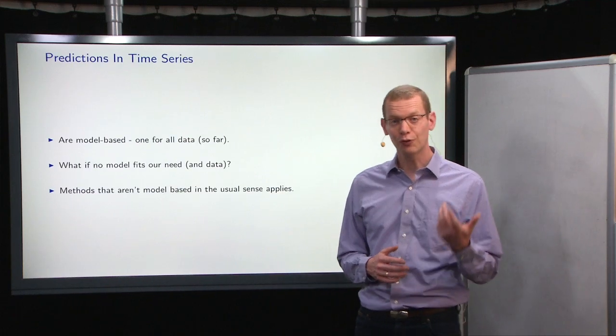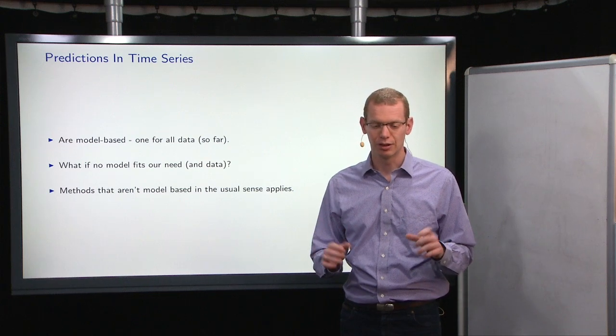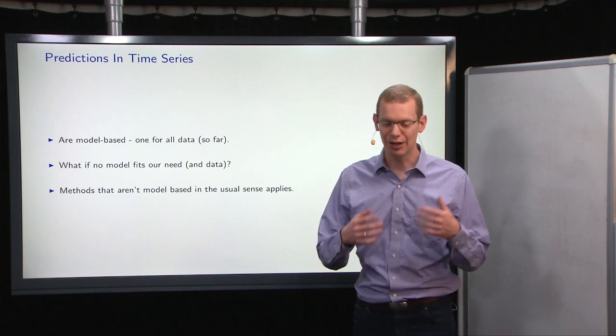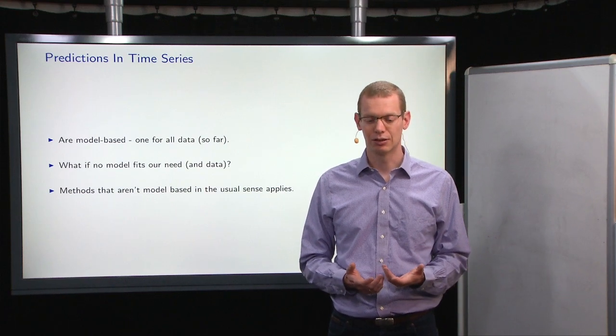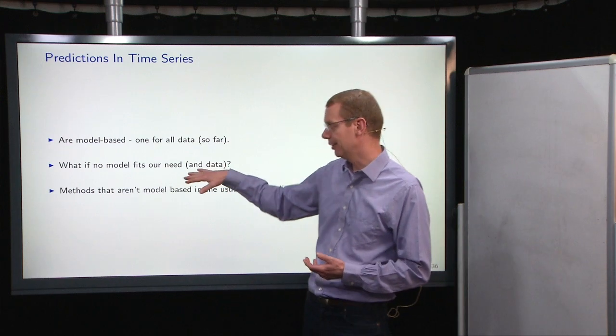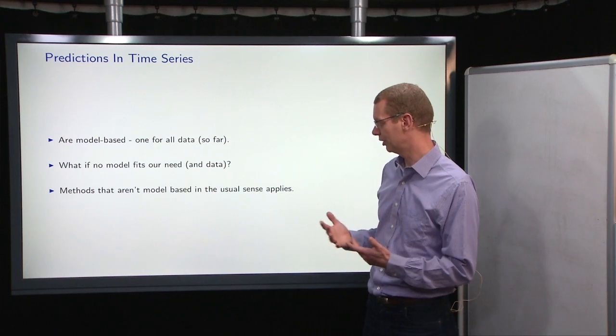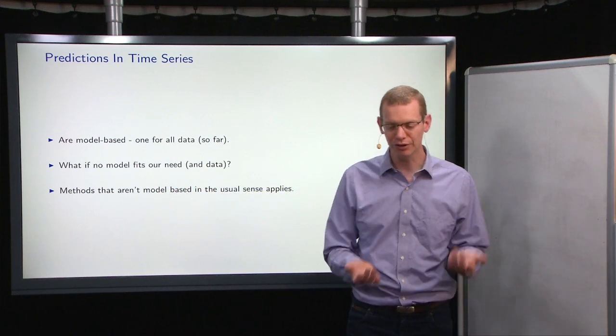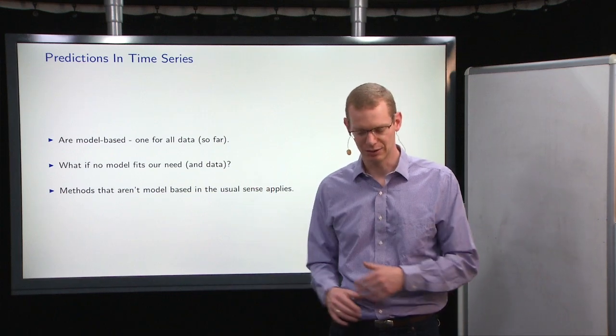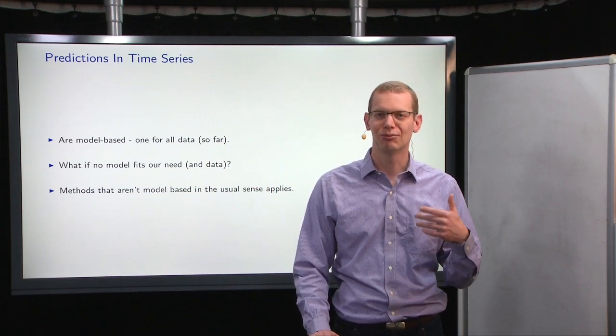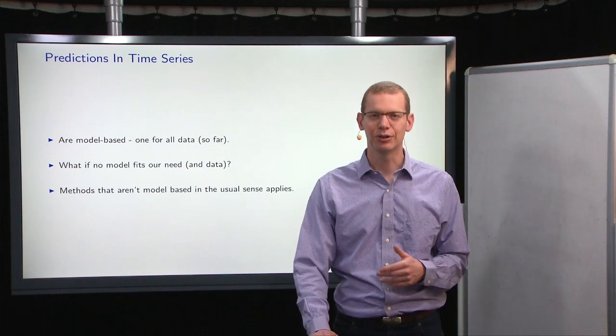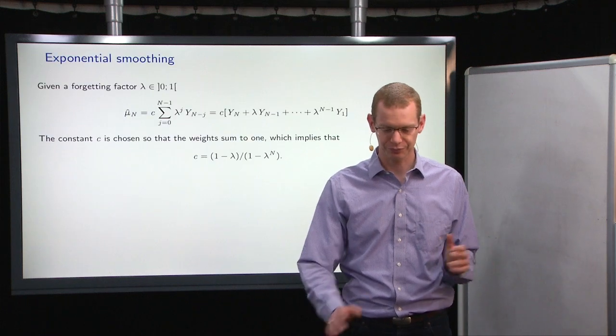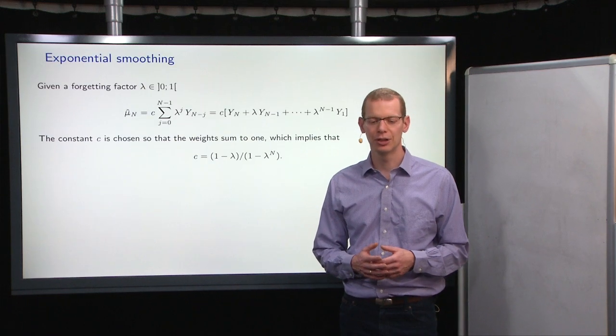Okay, so far, everything that we've done is model-based, one model for all the data that we have. So what happens if no model actually fits our needs? The data cannot be fitted by one particular model. Well, we can do something where we don't want to have a model for all the data, but just want to use the most recent data. If it's just a prediction, maybe we can do that without considering everything. One such case is what is called exponential smoothing.